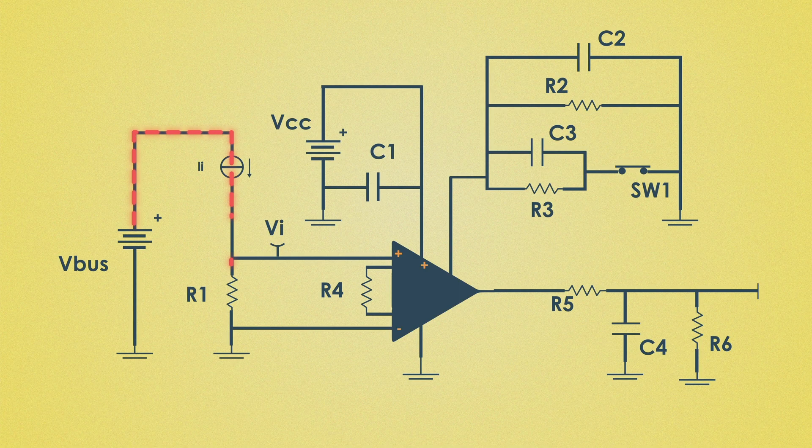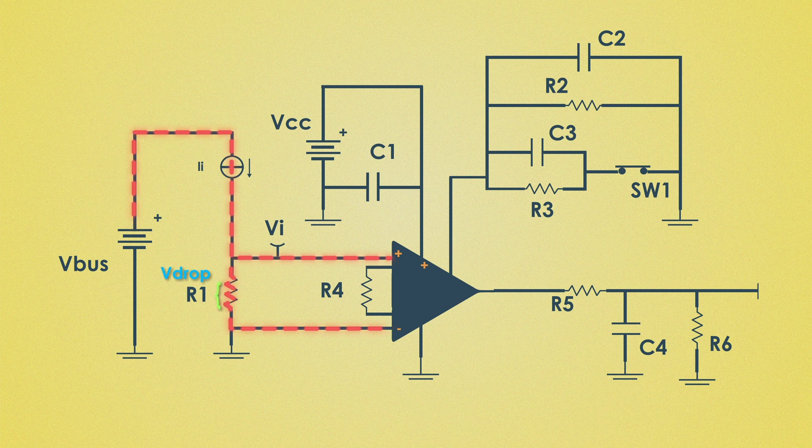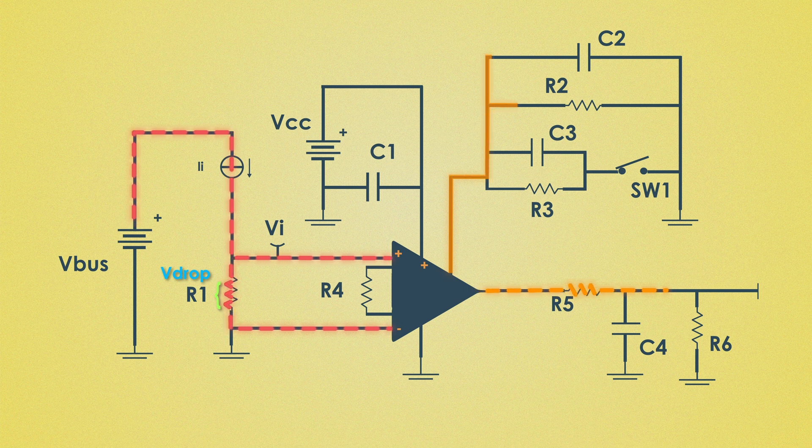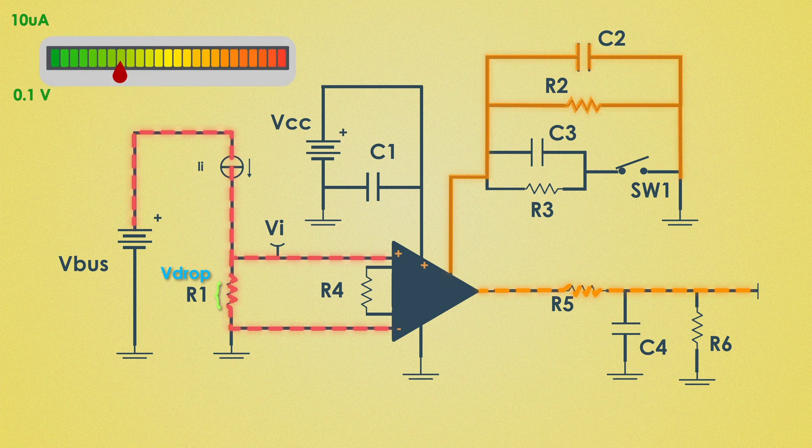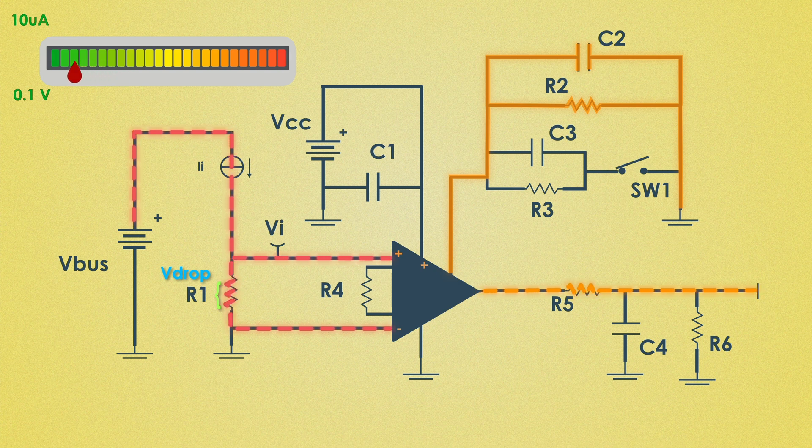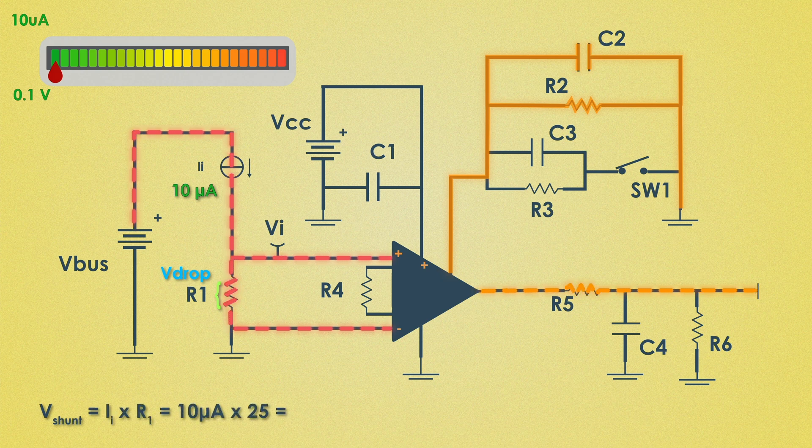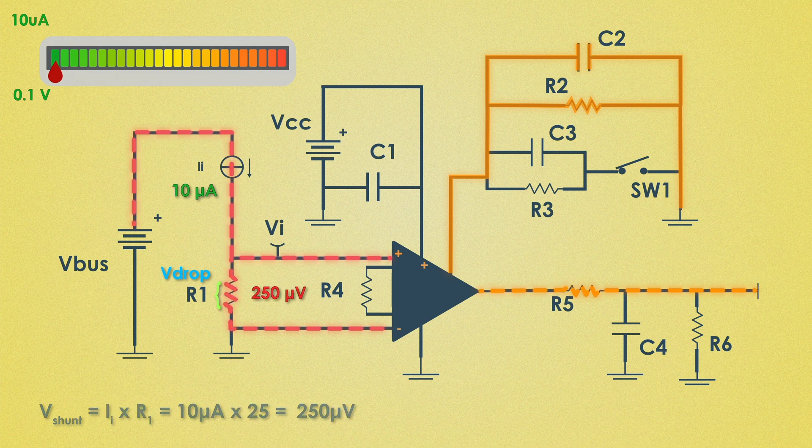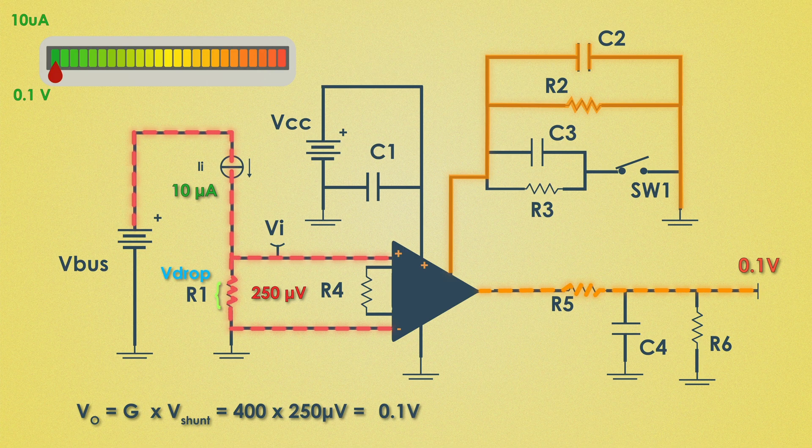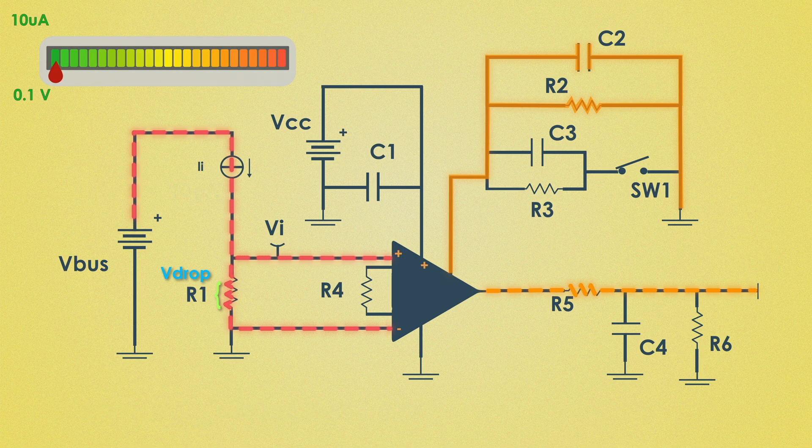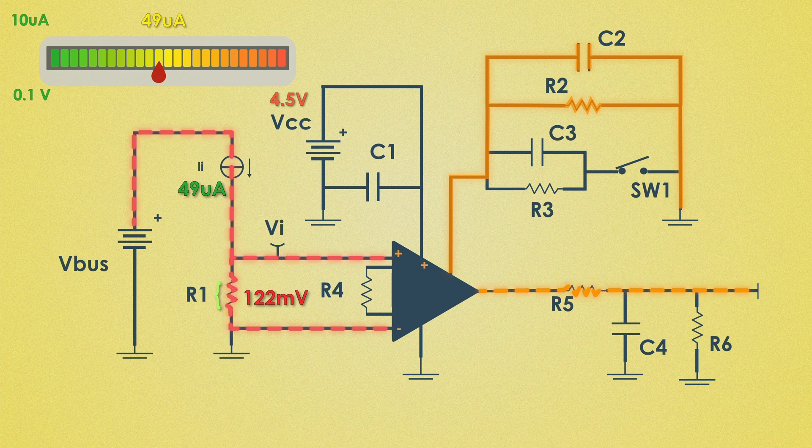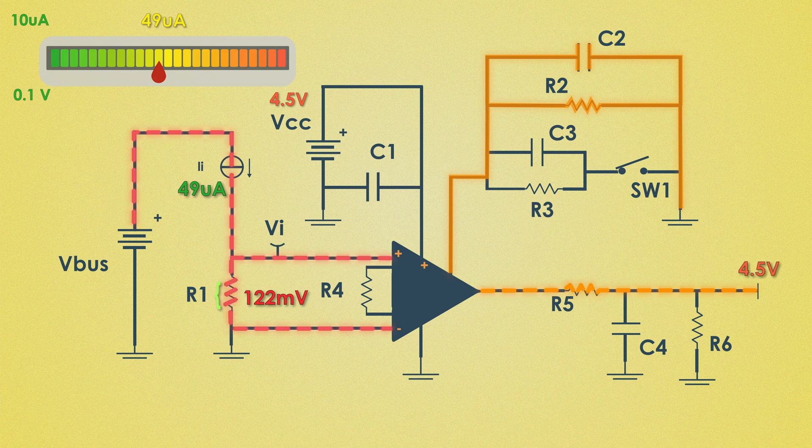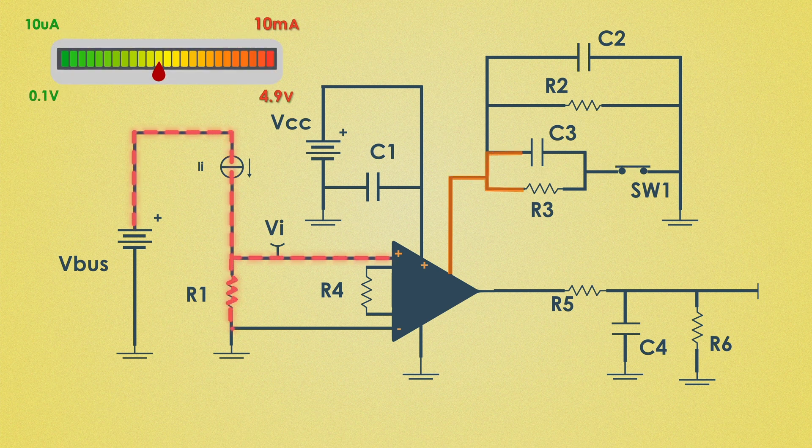When the input current is very small the voltage drop across this shunt resistor is also minimal. To amplify this small signal and make it measurable the circuit uses high gain of 400. For example if the input circuit is 10 micro amperes then the voltage drop across this shunt resistor will be only 250 micro volts. And with the amplified gain the amplifier will give value of 0.1 volt to showcase this 10 micro ampere current. And as the input current increases the voltage drop across this shunt resistor becomes significant. If the circuit continues with high gain the output voltage would saturate which will exceed the amplifier's output limit. To prevent this the circuit switches to a lower gain of 19.6.